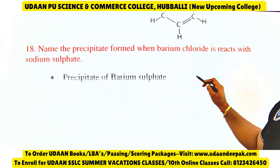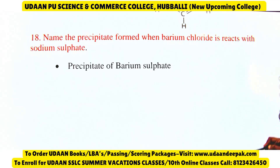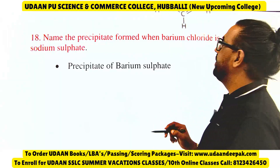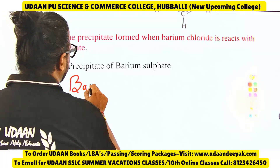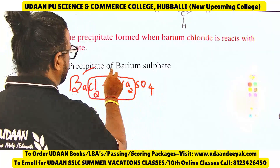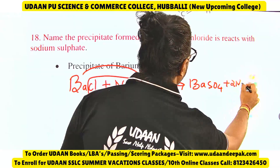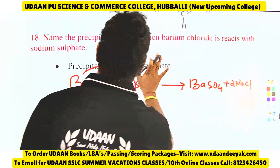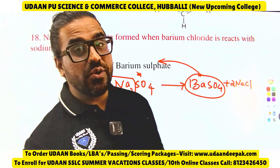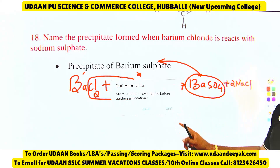Name the precipitate formed when barium chloride reacts with sodium sulfate. BaCl2 reacts with Na2SO4 to give BaSO4 plus 2NaCl. The right answer is that BaSO4 — barium sulphate — is the white color precipitate formed. You should know this equation.